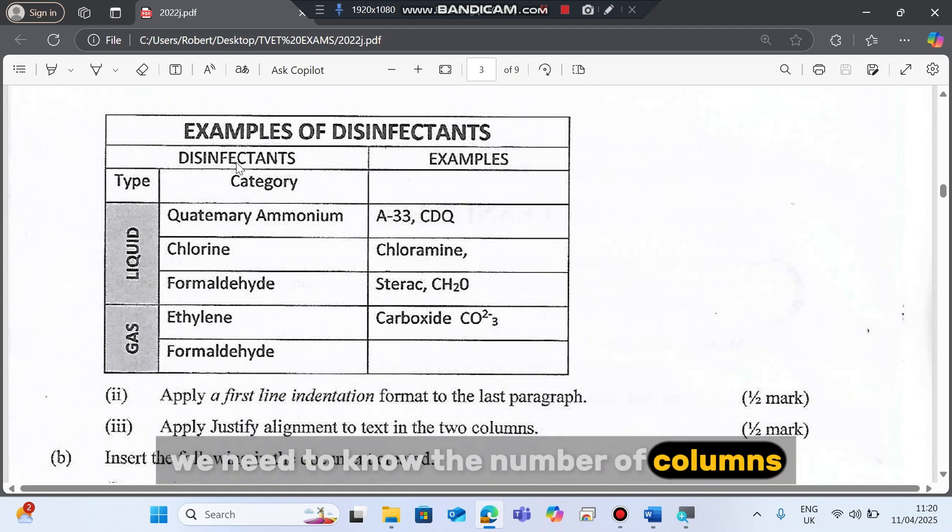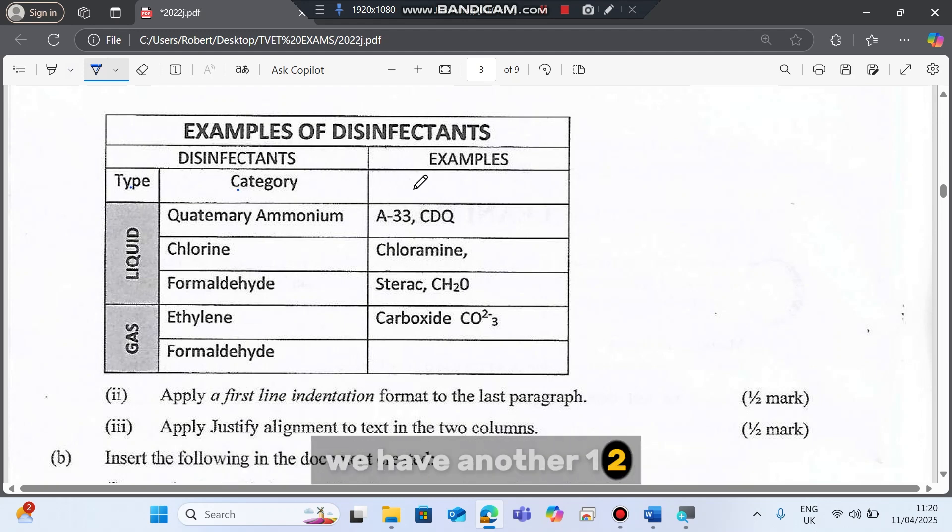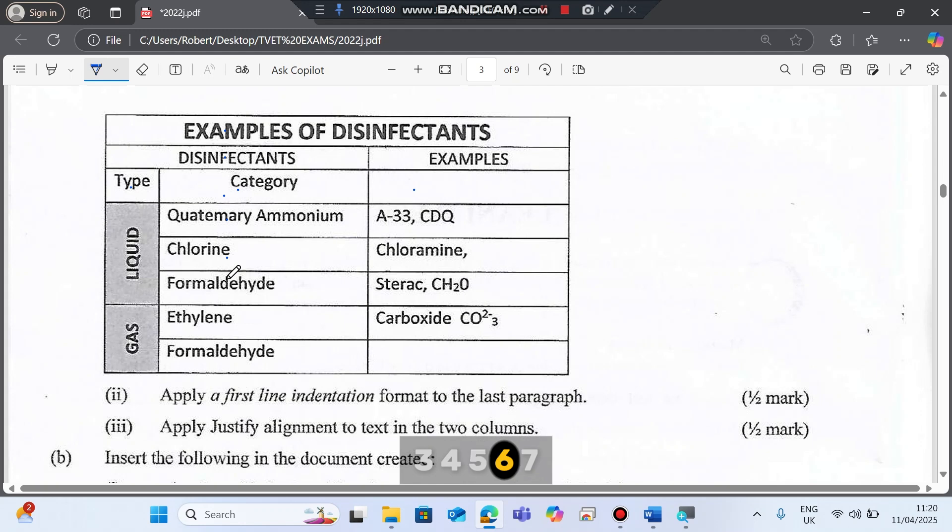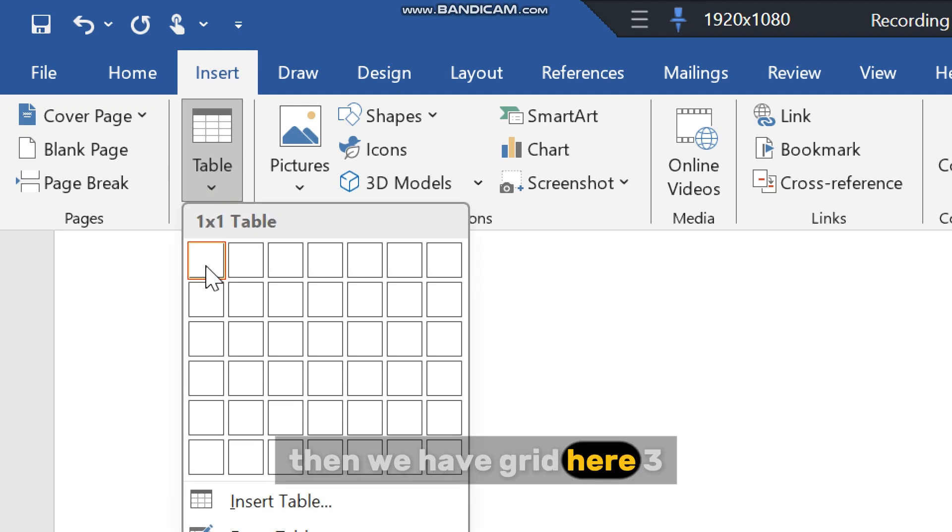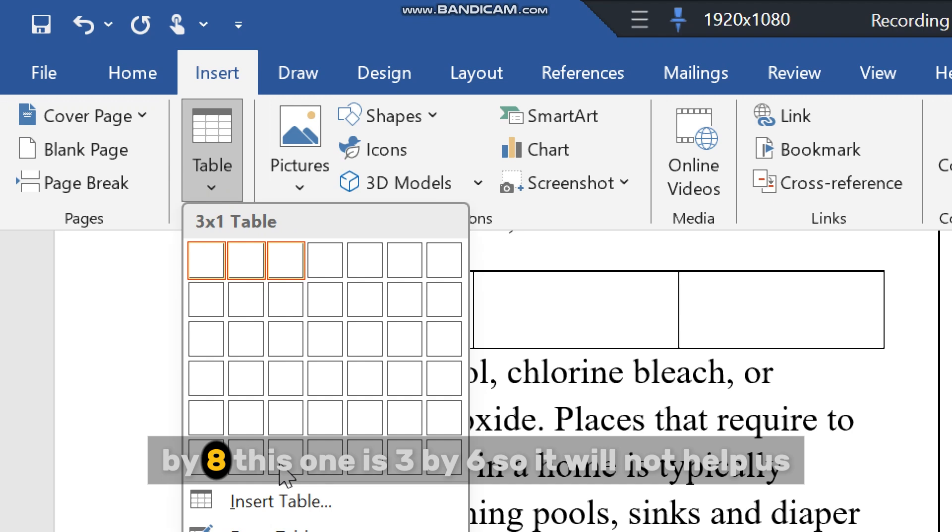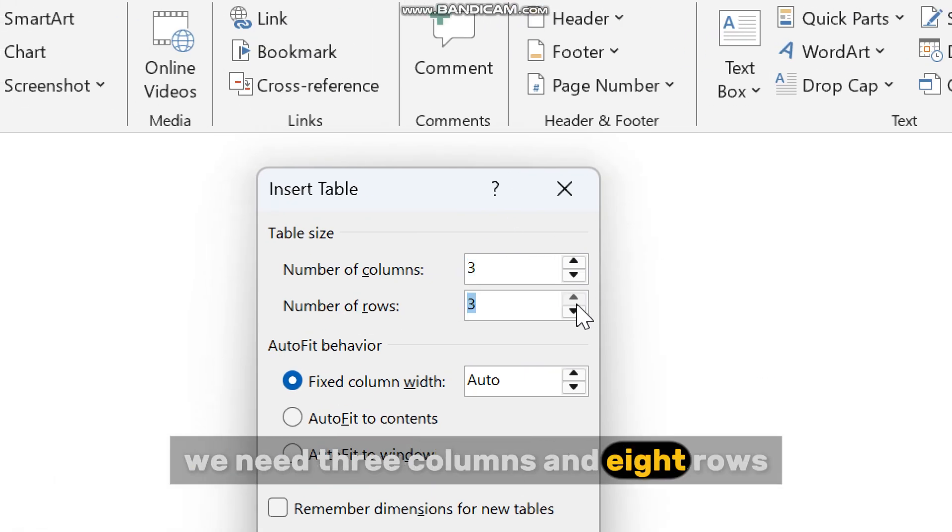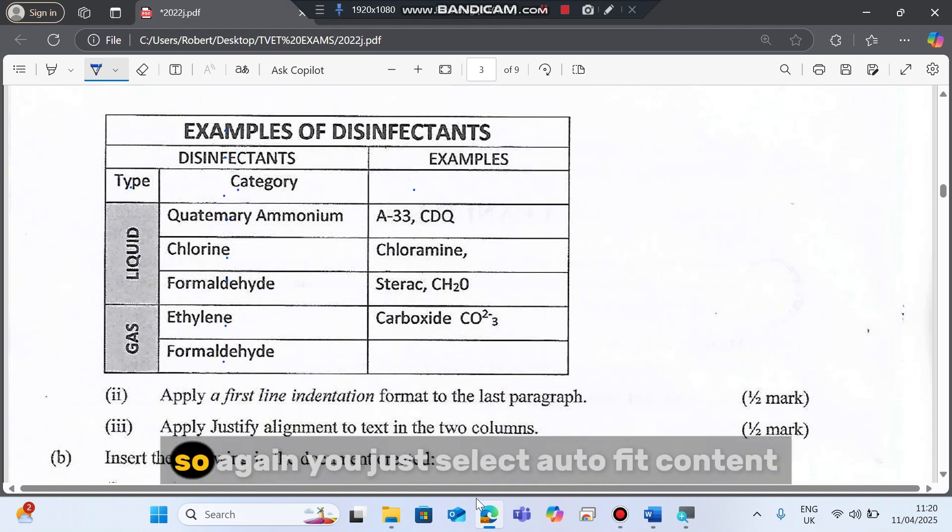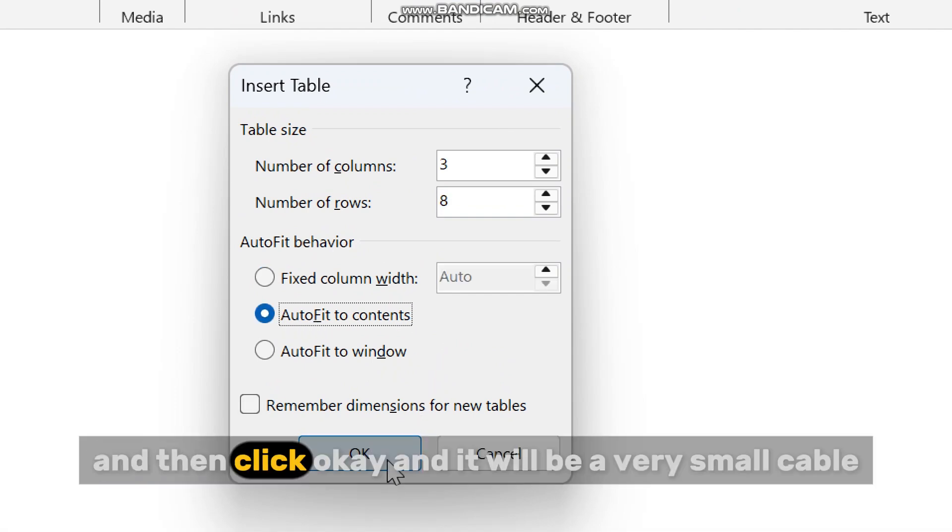In this table we need to know the number of columns. We count the maximum number of columns. From type we have here is one, we have another one, two, three. We have three columns. Number of rows, maximum number of rows: one, two, three, four, five, six, seven, eight. So we need a table of three by eight. To insert a table, we go to insert, then we have a grid here, three by eight. This one is three by six, so it will not help us. So we go to insert table. The table we need, three columns and eight rows. And then what is the nature of this table? The table is very small, so again just select auto fit contents.